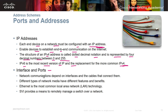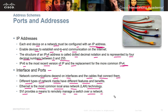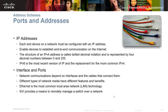Network communications depend on interfaces and the cables that connect them. Different types of network media have different features and benefits. Ethernet is the most common local area network technology — copper Ethernet Cat5, Cat5e, and Cat6. The SVI provides a means to remotely manage a switch over a network, giving you the ability to manage devices without traveling to their location.